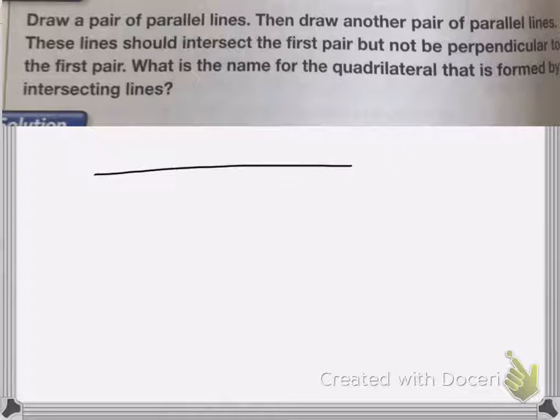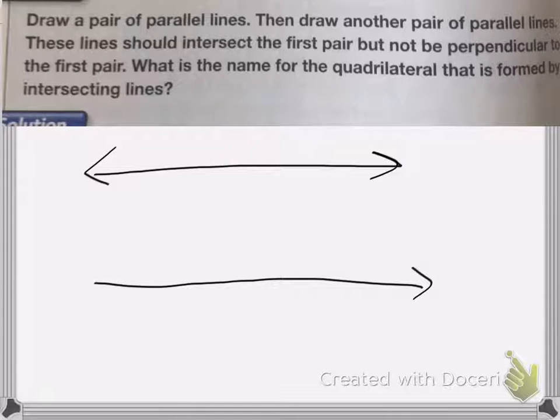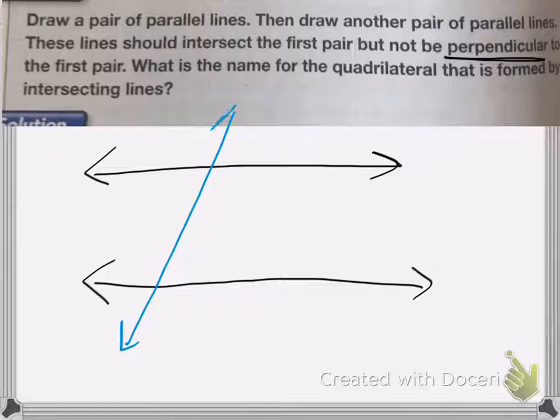So I'm going to draw one pair of parallel lines, and it's easiest just to do horizontal ones first. The second set says they should be a second pair of parallel lines that are not at right angles, because perpendicular means right angles. So I'm going to draw my second set of lines, and they'll be at an angle, and these two lines need to be parallel, so they're going to be the same.